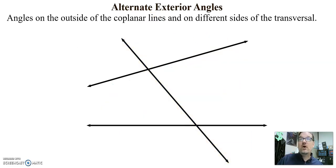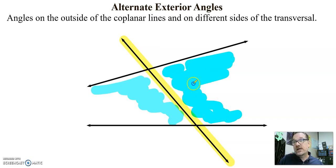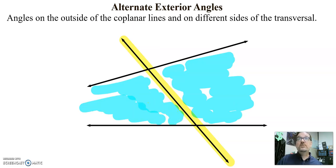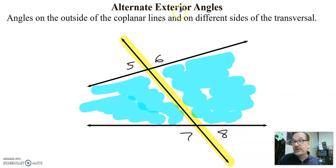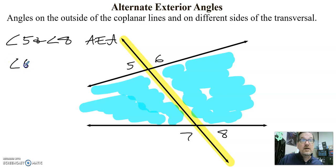If we have alternate interior angles, we also have alternate exterior angles — same rules, but instead of being on the inside, now we are on the outside. Highlight the transversal and shade on the inside. The exterior angles are five, six, seven, and eight. They are on opposite sides of the transversal. Angle five and angle eight are alternate exterior angles — five is on the left, eight is on the right, and they are both on the outside. Angle six and angle seven are also alternate exterior angles.